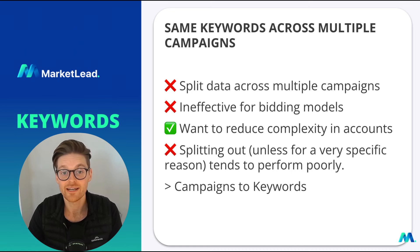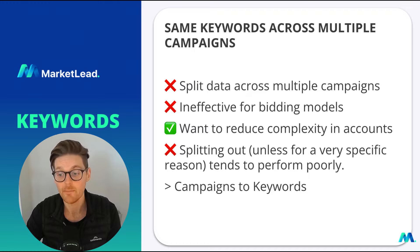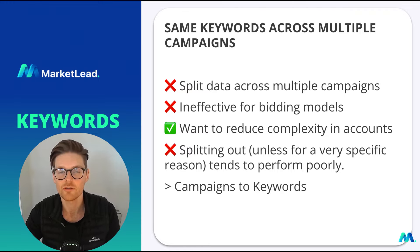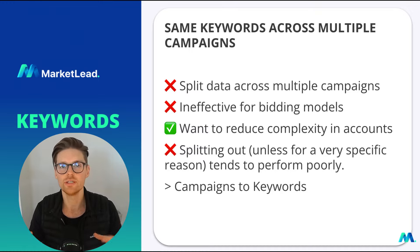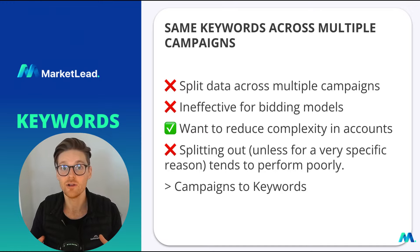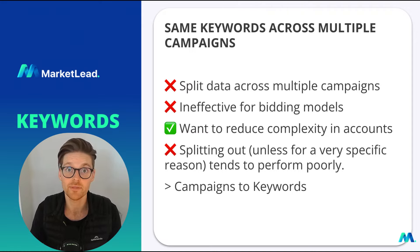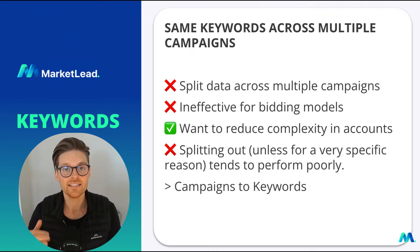The mistake I saw in an account that I'm auditing at the moment — a big account spending over $100,000 a month — was using the same keywords across multiple campaigns. The reason why I don't like this is when you do this, you're splitting the data for that keyword across multiple campaigns. It's fine if you're doing the old approach of manual cost per click, but with the new age of advertising, this client was using Maximize Conversions, a smart bidding model, so the data is being split across multiple campaigns for that one keyword.